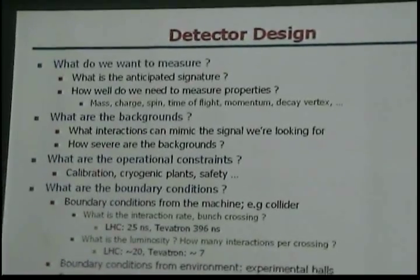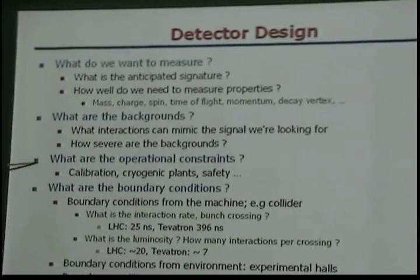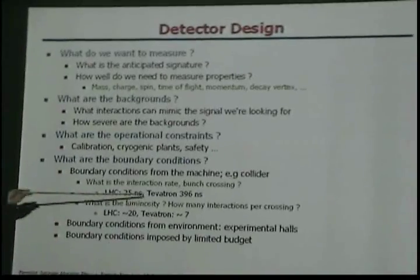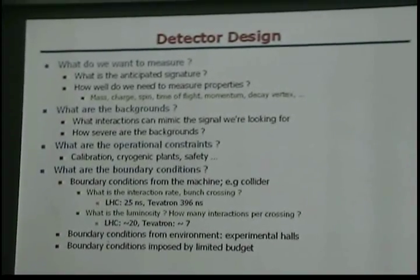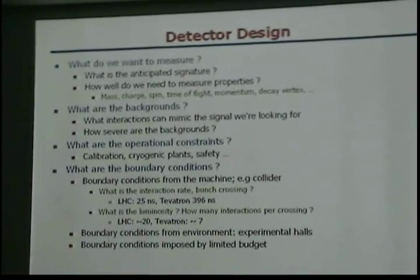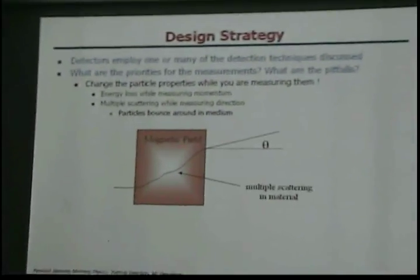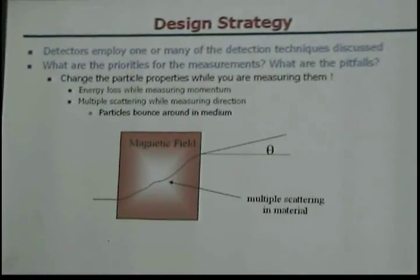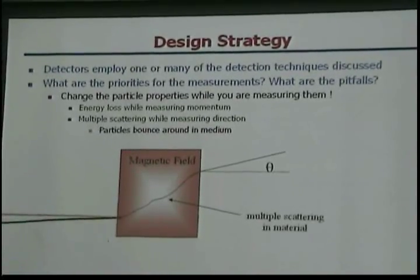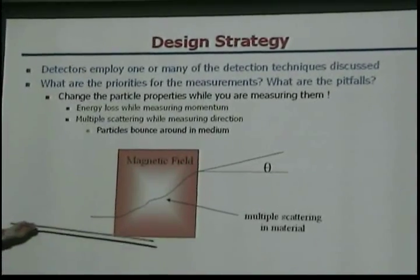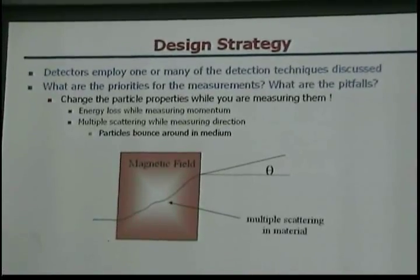If we want to design a detector, we of course want to know what we want to measure. We have to anticipate the signature, how well we need to measure it, what the backgrounds are, and what the constraints and boundary conditions are. For example, here at the Tevatron we have beams of protons and antiprotons that collide every 326 nanoseconds — so if your detector gives a signal out every microsecond, it's too slow. There's also a strategy: if you want to measure the trajectory of a particle very accurately, you cannot first have the particle go through a big piece of steel, because that would deflect it and cause interactions. There are certain priorities you have to set.